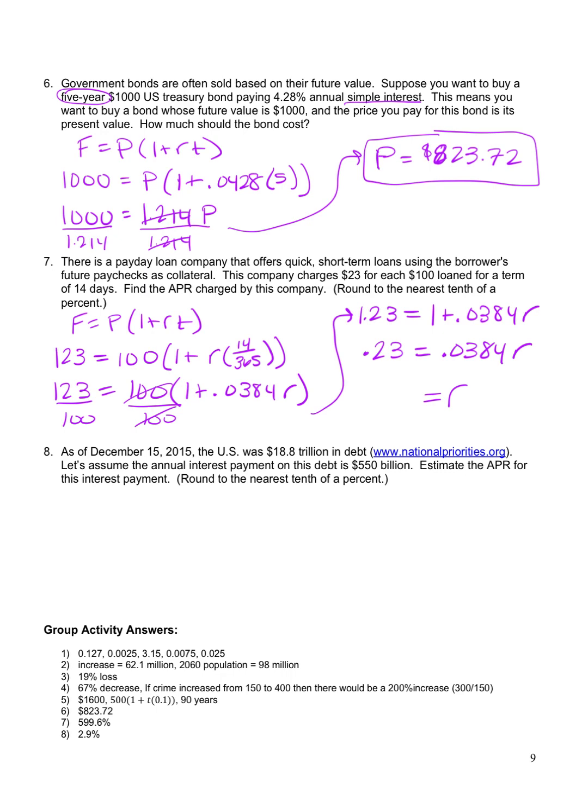So I have 0.23 divided by 0.0384, and I get 590. If I don't round at all, I get 5.996. Okay. That's if I don't... This 0.0384 was a rounded version of 14 over 365. I rounded that number. So if you don't round it, this is the answer you get. And then we have to change it to a percent by multiplying by 100. So my interest rate is actually 599.6%.